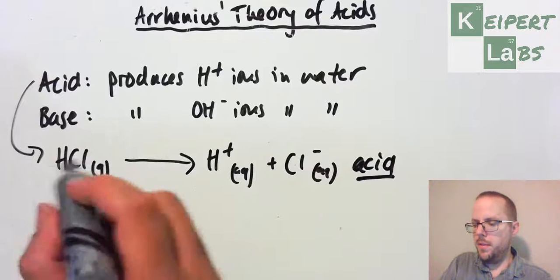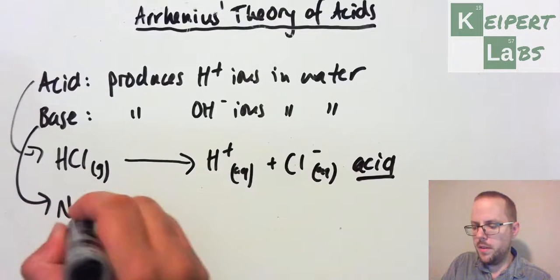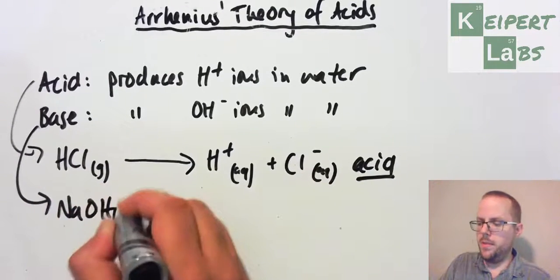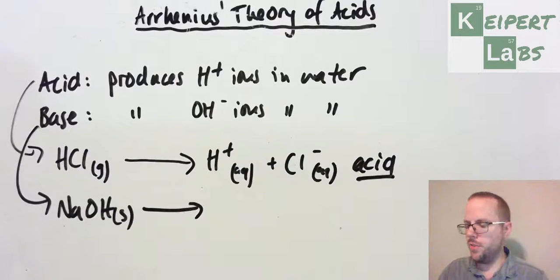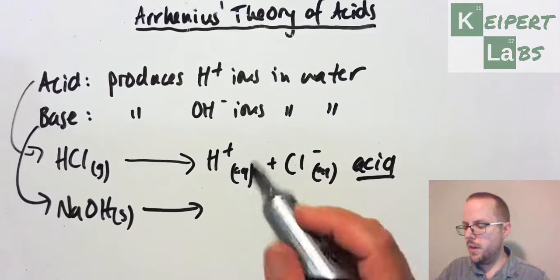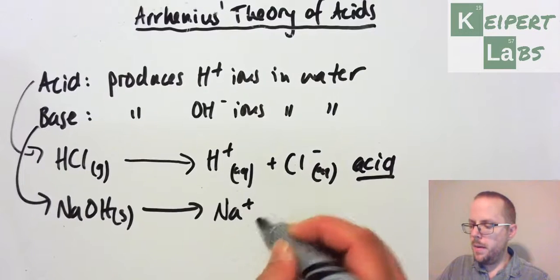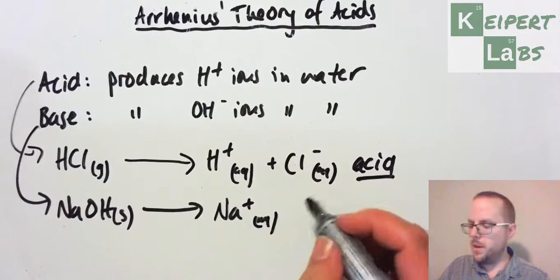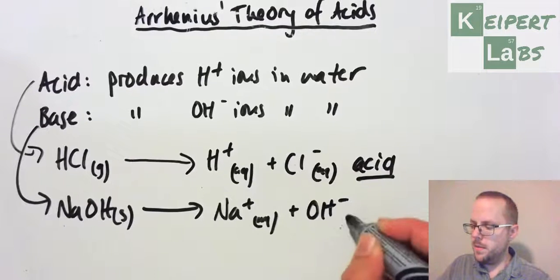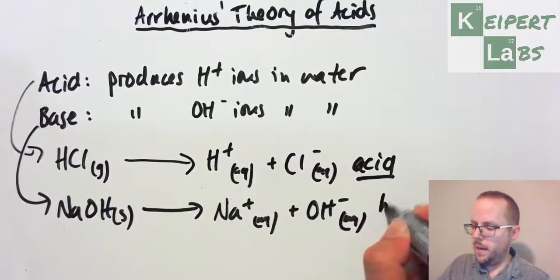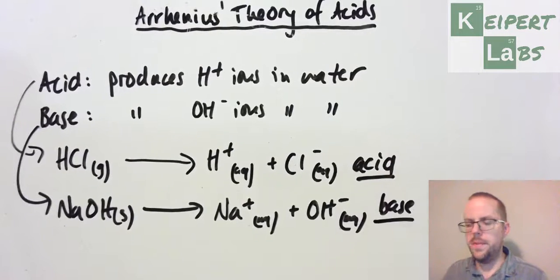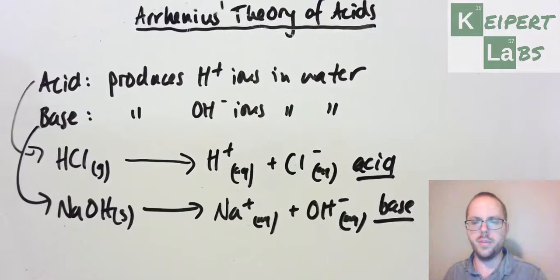And if we go for a base and take solid sodium hydroxide, very nasty stuff, the basis of things like Drano, when we put it in water we get sodium ions and hydroxide ions. Therefore, making it a base, fitting those definitions. Classic examples of what Arrhenius was talking about.